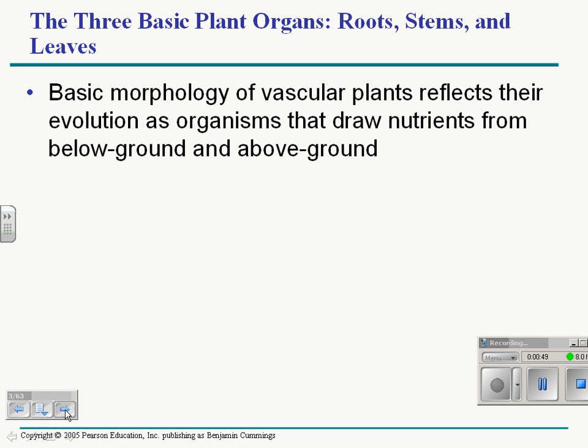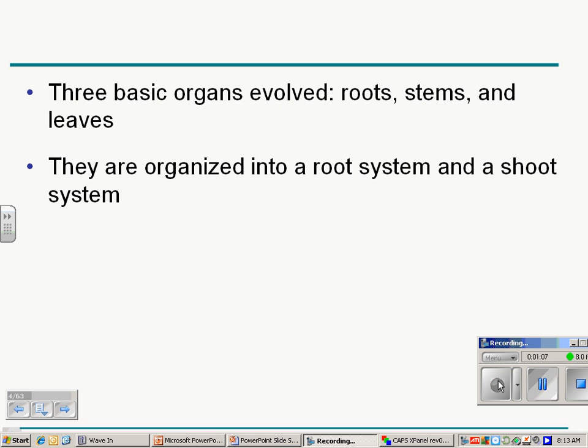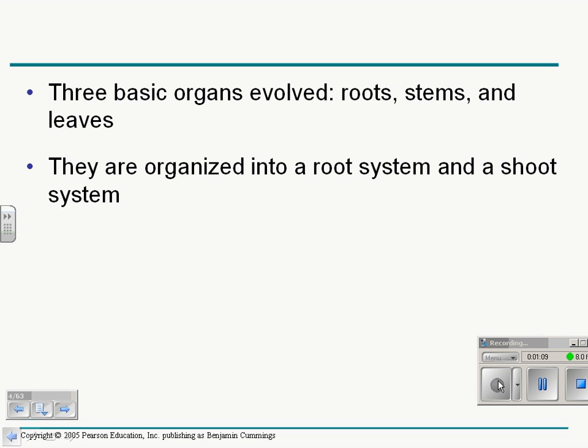So we're going to talk about a term called morphology. Morphology means basically body. Basic body plan is morphology. So there are three organs, there's actually four. Root, stems, and leaves. And of course, flowers, which we'll actually talk about at a later time. And they call this a root system and a shoot system. We'll explain that in a second too.